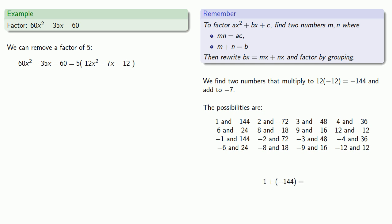So we'll try 1 and -144. We know they multiply to -144, and so the only question is, do they add to -7? Nope. How about our next pair, 2 and -72? Nope. 3 and -48? Nope. 4 and -36? Nope. 6 and -24? Nope. 8 and -18? Nope. 9 and -16?